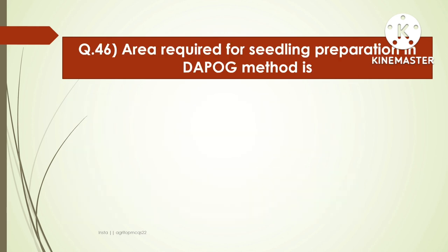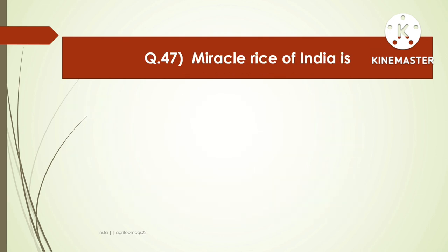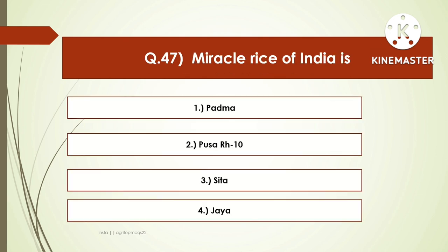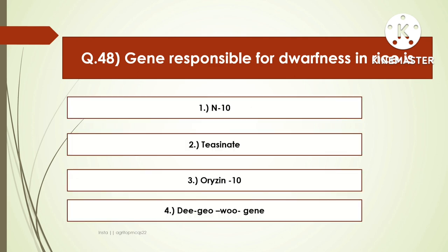The next question is: the area required for seedling preparation in the depot method is — options are 40-50 cm square, 70-80 cm square, 75-80 cm square, or 25-30 cm square. The right answer is 25-30 cm square. The next question: the miracle rice of India is — options are Padma, Pusa, RH10, Sita, or Jaya. The right answer is Jaya. Jaya variety of rice is known as the miracle rice of India. The next question: the gene responsible for dwarfness in rice is — options are N10, Taichung, Horizon 10, or Dee-geo-woo-gen. The right answer is Dee-geo-woo-gen. Dee-geo-woo-gen is responsible for dwarfness of rice.